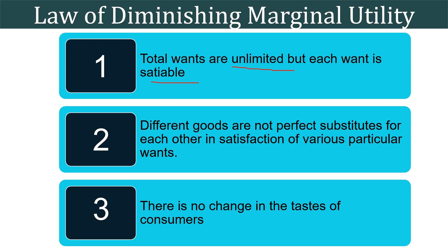The second fact is that different goods are not perfect substitutes for each other in satisfying various particular wants. When an individual consumes more and more units of a good, the intensity of his particular want for the good diminishes. But if the units of that good could be devoted to the satisfaction of other wants and yielded as much satisfaction as they did in the beginning, the marginal utility would not have diminished.